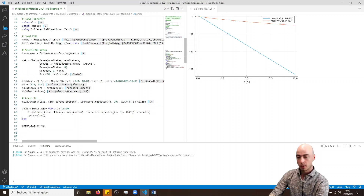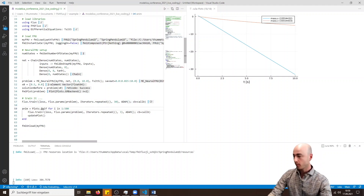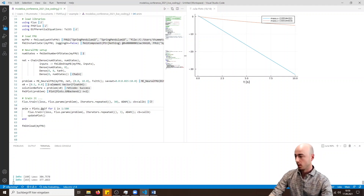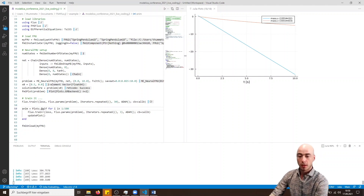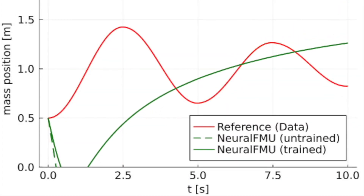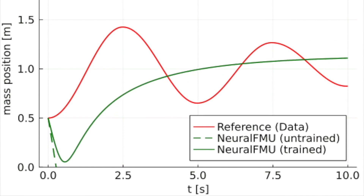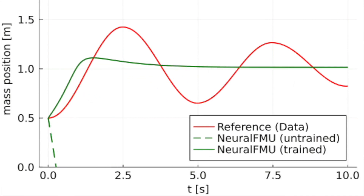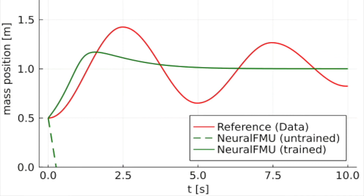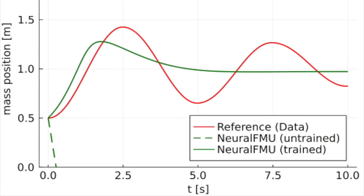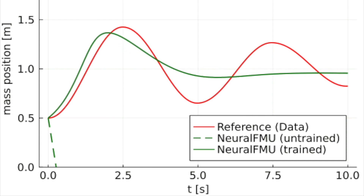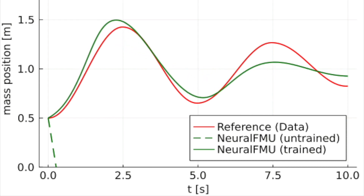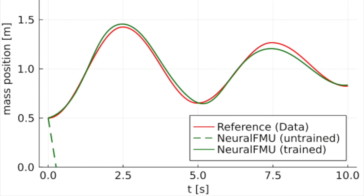As you can see, the loss slowly decreases. We will now speed up training and look at the results. Originally, our neural FMU performed really badly because it was randomly initialized, but after short training it's doing a much better job. Training has not converged at this point, and we could further improve the fit by using, for example, larger network topologies.